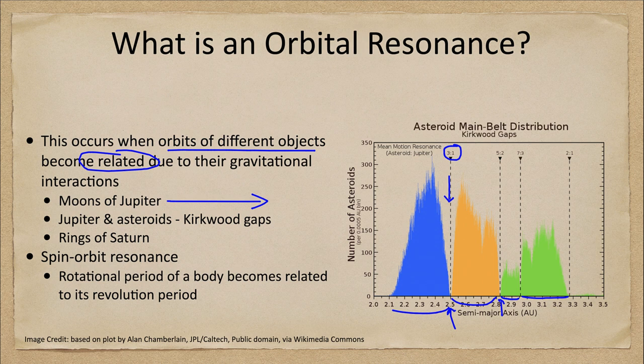We can see resonances at other integer multiples as well — things like five to two, seven to three, and then way out at the edges, the two-to-one resonance with Jupiter.